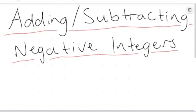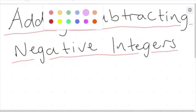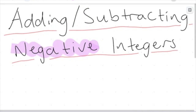Hey everyone, welcome to another video. In this video, we're going to start getting into some more of the nitty gritty — and for a lot of people, confusing bits — to do with adding or subtracting negative integers. I'm going to give you a couple of analogies and number patterns to explain some of the differences that happen when we add or subtract negative integers. Before we were dealing with positive integers, now we're looking at negative ones, and this is where it starts to get hard.